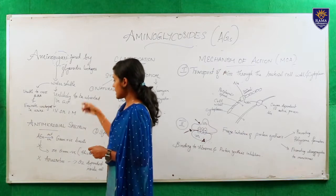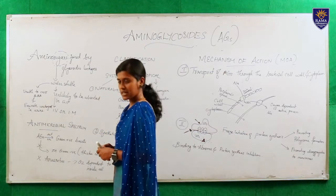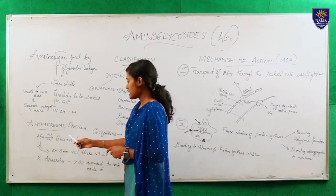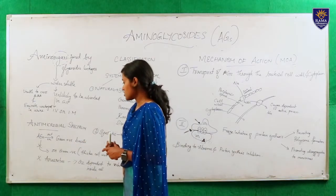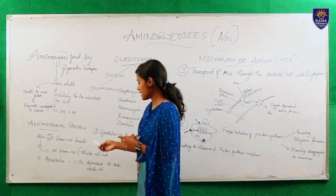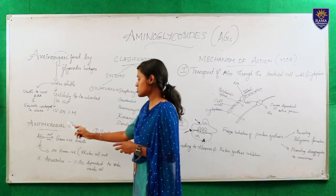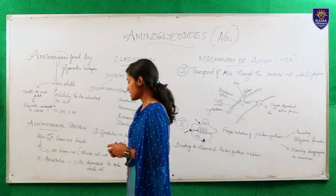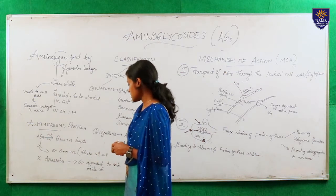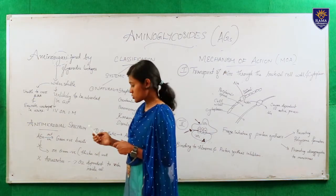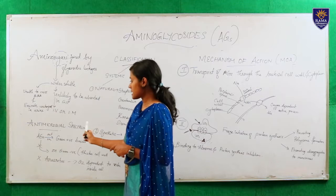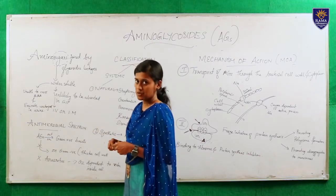Now we shall move on to the antimicrobial spectrum. Aminoglycosides act on gram positive bacilli and they do not act on gram negative bacilli as gram negative bacilli have thicker cell wall. They do not act on anaerobes either, because in their mechanism they need oxygen-dependent transport to enter inside the cell. So they act on gram positive bacilli and aerobes.